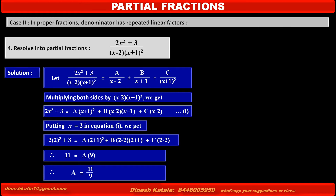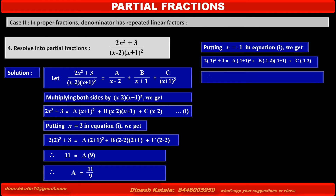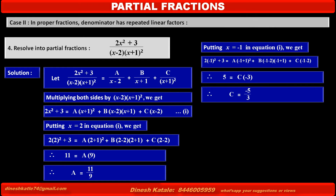Now it is easy to find the value of C first by cancelling terms of A and B, making their common factor (x + 1) equal to 0. Putting x = -1 in equation 1: 2(-1)² + 3 = A(-1 + 1)² + B(-1 - 2)(-1 + 1) + C(-1 - 2). Solving: 5 = C × (-3). Therefore C = -5/3.